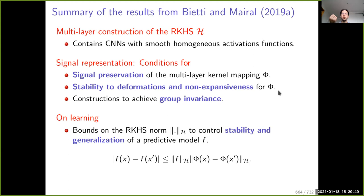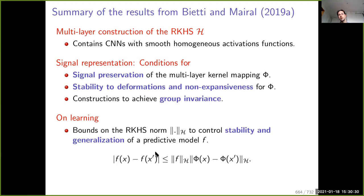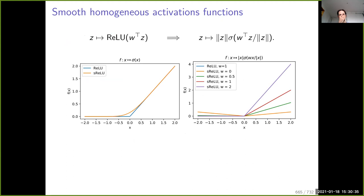We also characterize the stability to signal deformations — image deformations — of the kernel mapping phi. There is also a part about group invariants that I will go very fast on. And there is a part about learning: what can we say about the RKHS norm? Can we derive stability and generalization bounds for predictive models? We have seen in class that the RKHS norm is often what we care about for kernel-based generalization bounds.